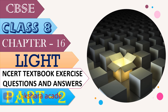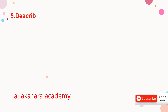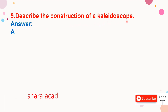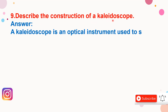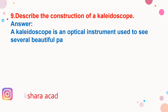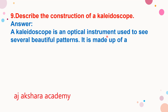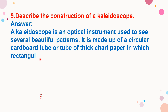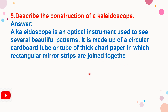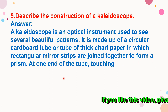First question: Describe the construction of a kaleidoscope. Kaleidoscope is an optical instrument used to see several beautiful patterns. First, we have to take a circular cardboard tube or tube of thick shot paper in which rectangular mirror strips are joined together to form a prism.